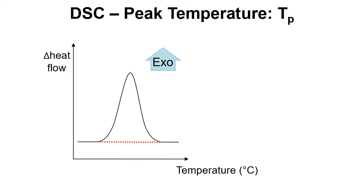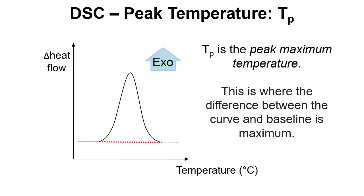Next we have the peak temperature and this is peak maximum temperature and this is simply where the difference between the baseline and the curve is maximum. Right here this is the biggest difference between the baseline and the peak. So this is our T subscript P.